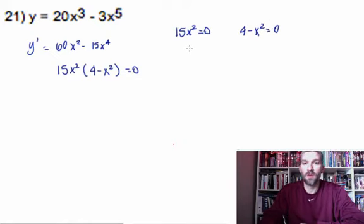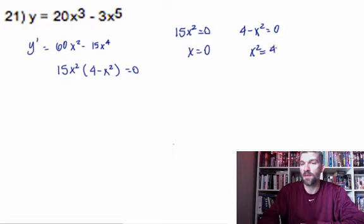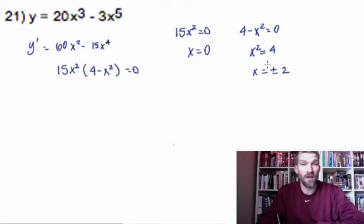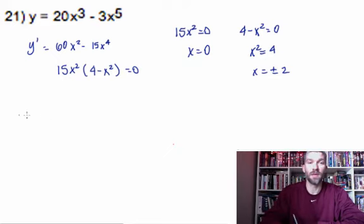From 15x squared equals zero, we get x equals zero. From 4 minus x squared equals zero, we get x squared equals 4, so x is going to be plus or minus 2. Those are the places where we could have minimums and maximums.